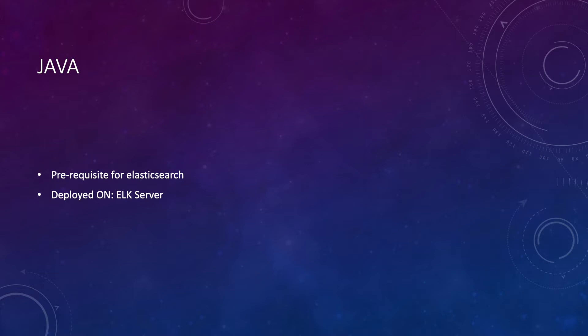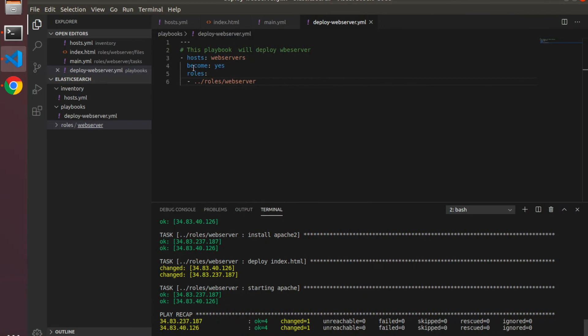In this short lecture we'll create a new role called Java to install OpenJDK 8 onto the ELK servers. Java is a prerequisite for installation of Elasticsearch, so let's get started.